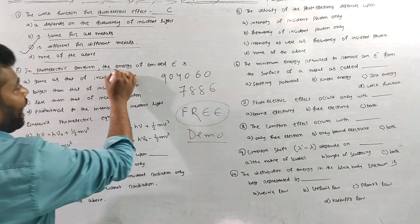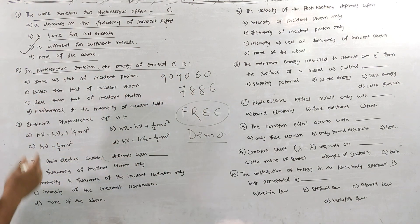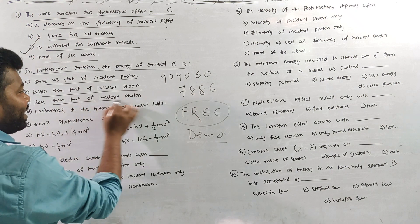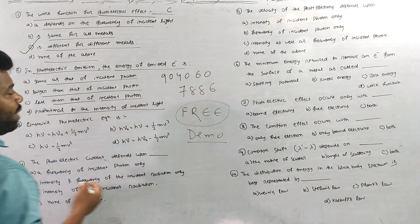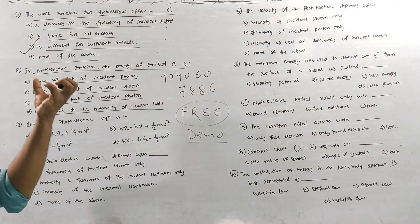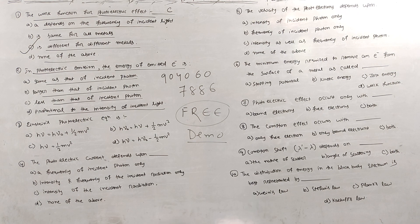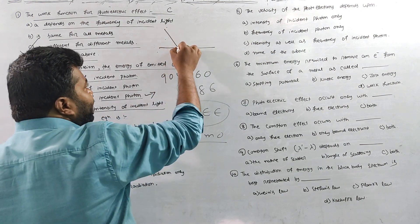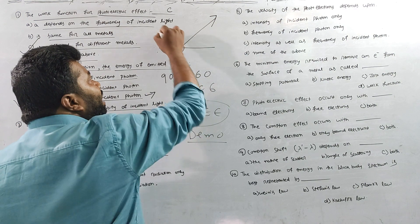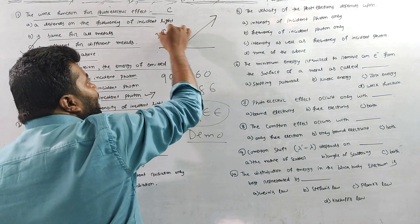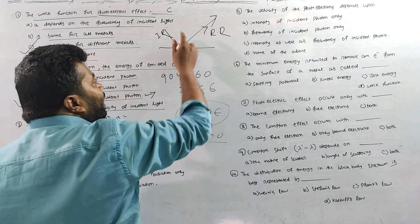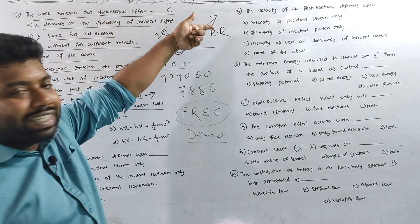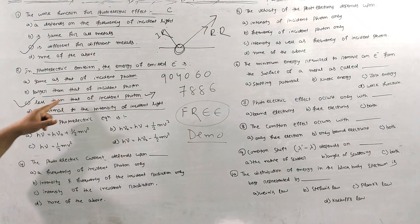The second question: in the photoelectric effect, the energy of the emitted electron is — same as that of the incident photon, larger than that of the incident photon, less than that of the incident photon, or proportional to the intensity of the incident light. In photoelectric emission, some energy is observed and some goes out, so the energy is less than that of the incident photon.